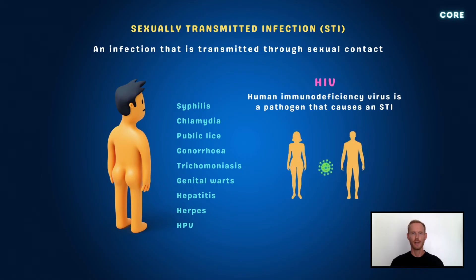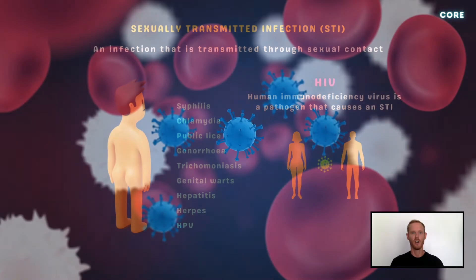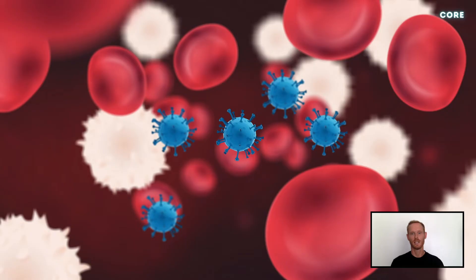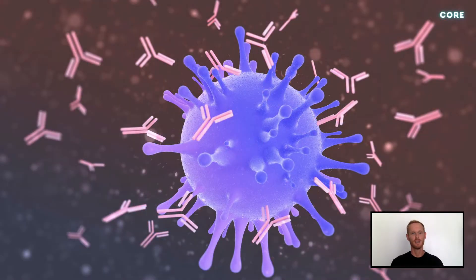HIV is present in the bodily fluids of infected people, such as blood and semen, and can therefore be transmitted from person to person through sexual intercourse. The virus is thought to attack a particular type of lymphocyte, or white blood cell.